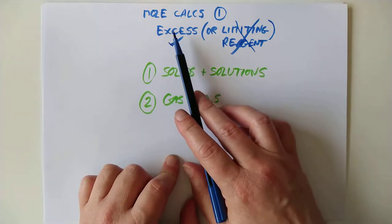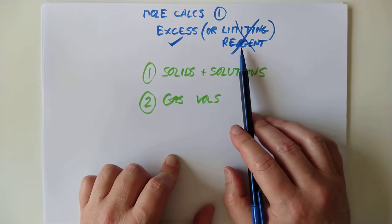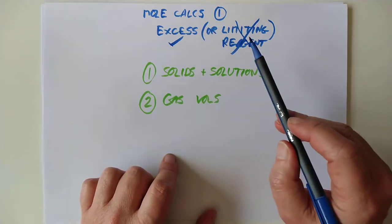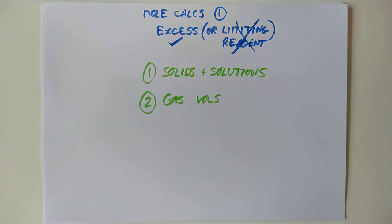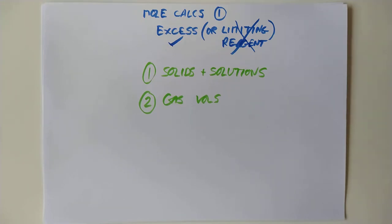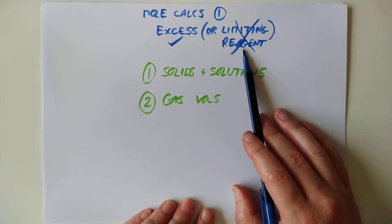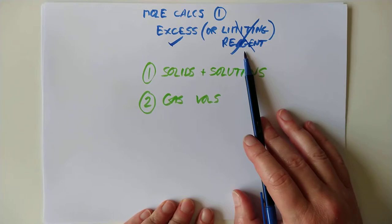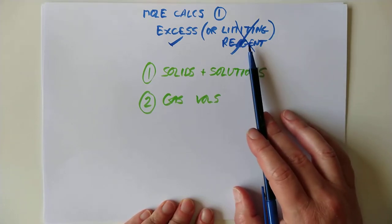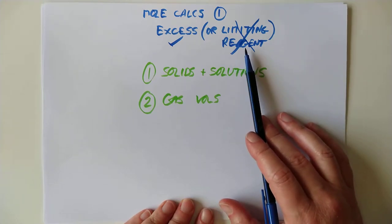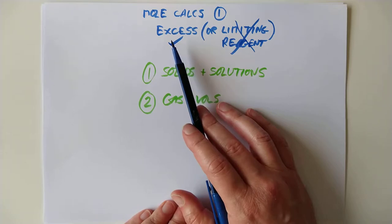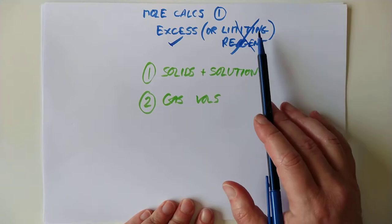Sometimes the questions will ask you to calculate the excess reactant — or reagent, actually, is the phrase they often use. Reagent is an old fancy chemical term for chemical. Or they'll ask you to calculate the limiting chemical. In most chemistry reactions, you will accidentally or intentionally add more of one chemical than you actually need to react all of the other chemical. One of your two chemicals will be completely reacted, and when that's all reacted, it's the end — the reaction stops. That is called your limiting reagent. When you've burned all of it up, it's the end of the reaction. And that also means you'll have some of the other chemical left over, and that's called the excess reagent or excess chemical.